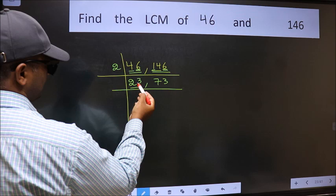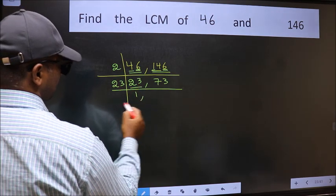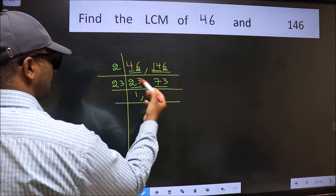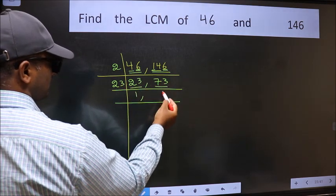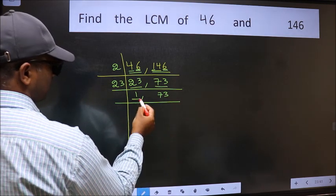Now here we have 23. 23 is a prime number, so 23×1 is 23. The other number 73 is not divisible by 23, so you write it down as it is. Now we got 1 here.